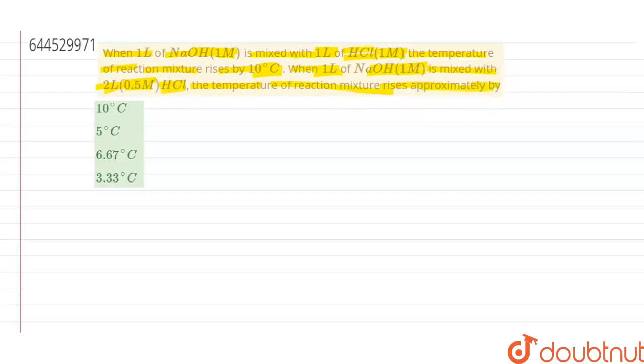There are two conditions given in our question. In the first condition, it is told that when we are mixing equimolar solutions of NaOH and HCl with equal volume, then the temperature of the reaction mixture is rising by 10 degrees Celsius. As it is the first case, we are denoting it with the subscript T1. Delta T1 is 10 degrees Celsius.